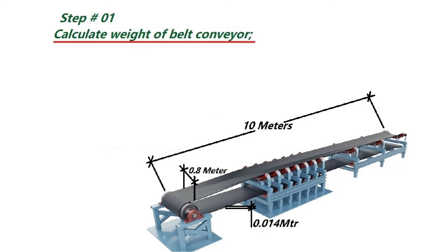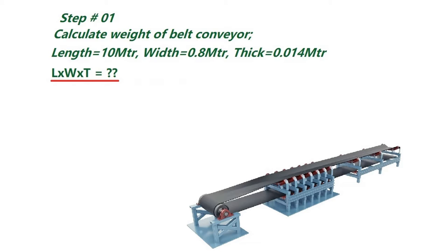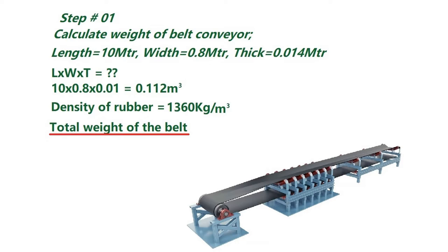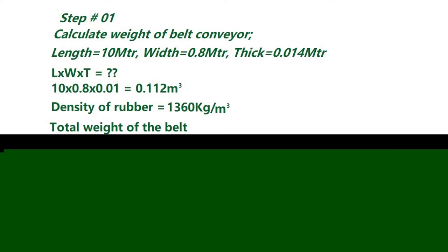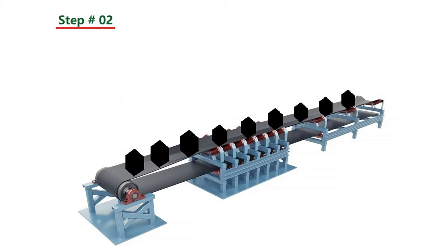First of all, calculate the belt width, length, width, and thickness. We need to multiply all of them together. We have different types of belt conveyors with different plies and steel wire, but here we will take the normal rubber density, which is 1360 kg per cubic meter. We can calculate the total weight of the belt conveyor by multiplying by the density, and here we have the belt weight of 152.13 kg.